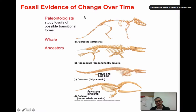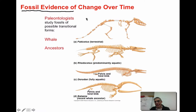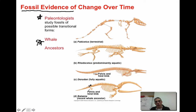When looking at evolution and descent with modification, we need to look at the evidence that supports this idea. One piece of evidence is fossil evidence, which indicates that we do have change over a period of time. Paleontology helps us do this — a paleontologist studies fossils and looks at the transitional forms of different organisms. In this case they're looking at a whale as an example, and down here towards the bottom is our most recent whale ancestor.